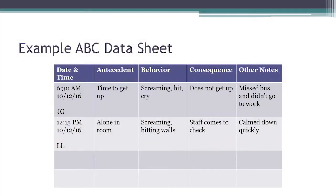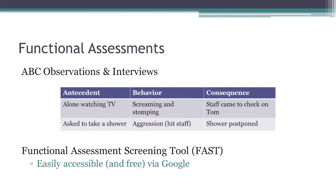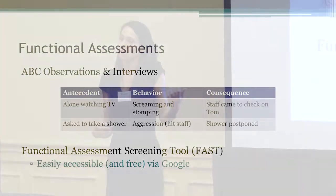Here's another ABC data sheet example. It's time to get up — screaming, hitting, crying — and the child doesn't get up, misses the bus, and doesn't go to work. It might be related to getting out of work, but it might also just be that they're tired. In another example, the individual is alone in their room screaming and hitting walls; staff come in, and the person calms down quickly. That last column — I sometimes call it 'effect' — captures what is the effect of the consequence. Because if staff come in and the person calms down right away, that's much more suggestive of attention as the reinforcer. But if they continue to be very upset, maybe something on the TV is bothering them, or maybe they don't feel good — something is hurting them inside.